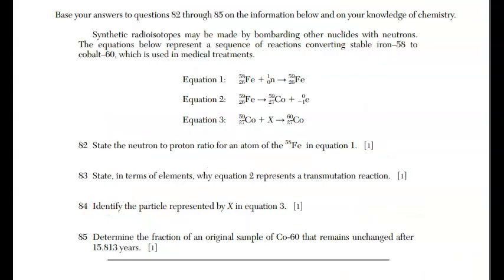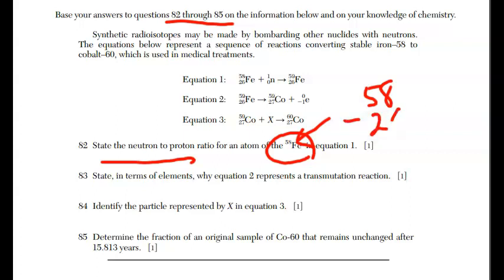This is it. We're looking at 82 through 85. A lot of times they do leave nuclear questions to the end, and this is no exception for January. In 82, it says, state the neutron-proton ratio for an atom of iron, 58, in equation one. So the number of neutrons. In order to get the number of neutrons, I'm going to take this mass number, 58, and I'm going to subtract the atomic number, which is 26. Use a calculator. 8 minus 6 is 2, and 5 minus 2 is 3. So the number of neutrons is 32, and the number of protons is 26. The number of protons is your atomic number and your nuclear charge.